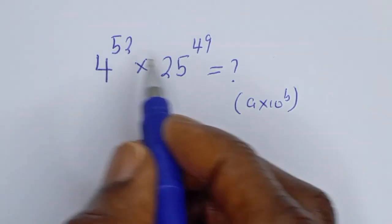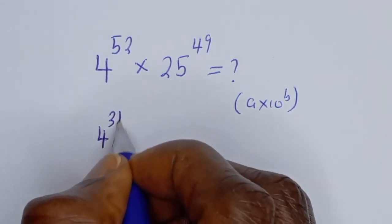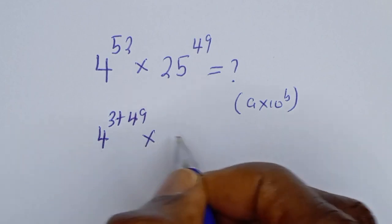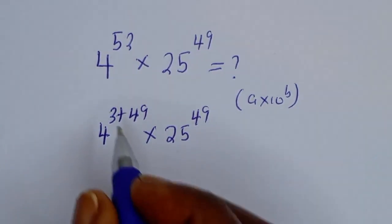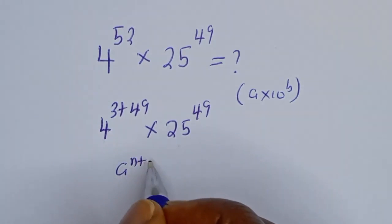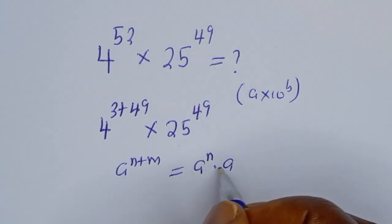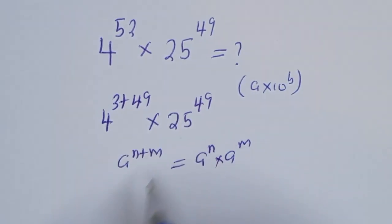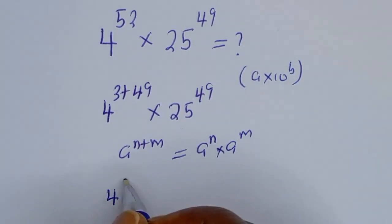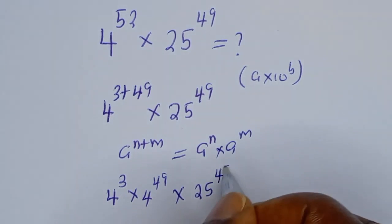4 to the power of 52 — since this is 49 — can be written as 4 to the power of 3 plus 49, multiplied by 25 to the power of 49. Using the rule that A to the power of N plus M equals A to the power of N multiplied by A to the power of M, this becomes 4 to the power of 3 multiplied by 4 to the power of 49, multiplied by 25 to the power of 49.